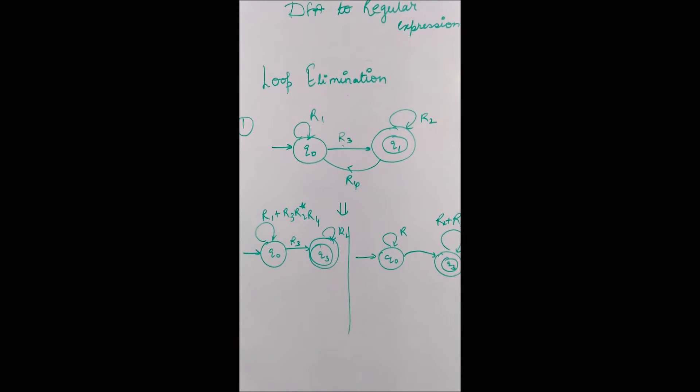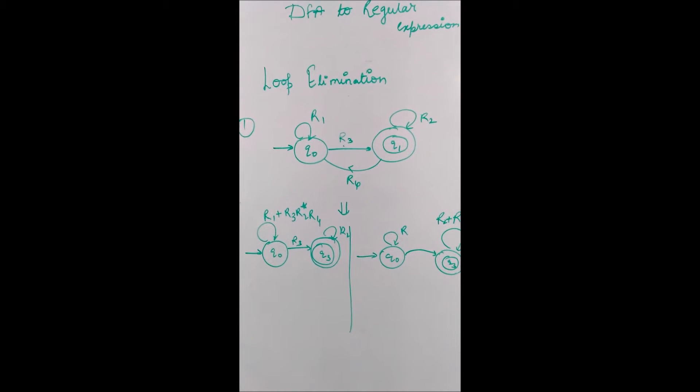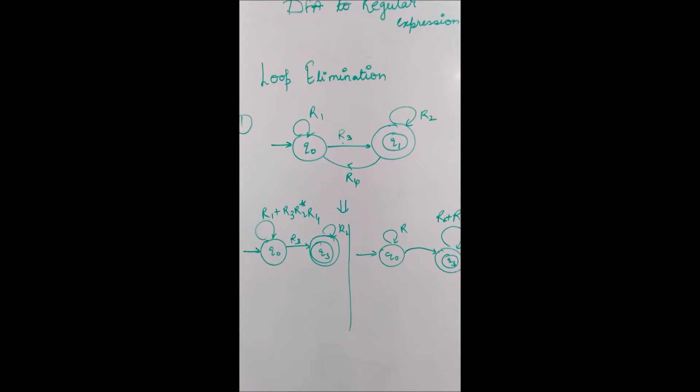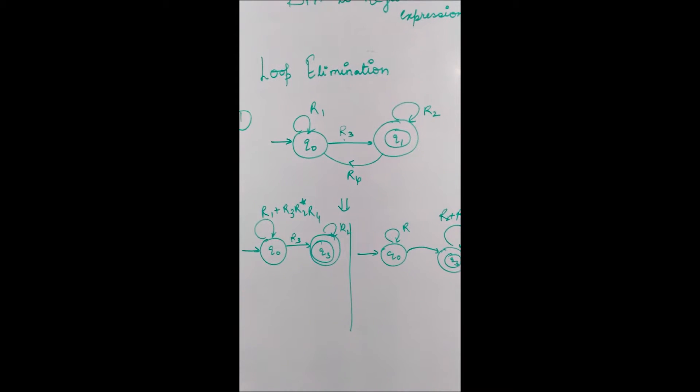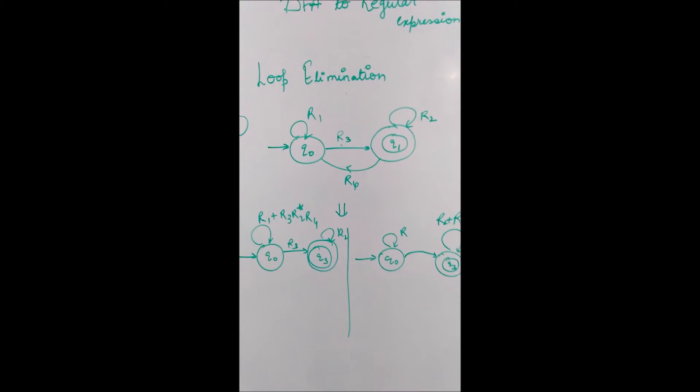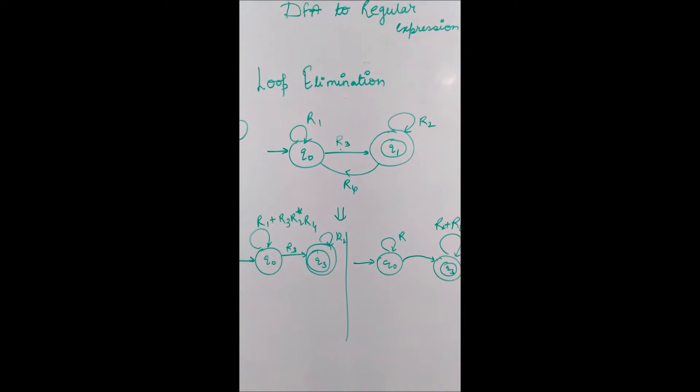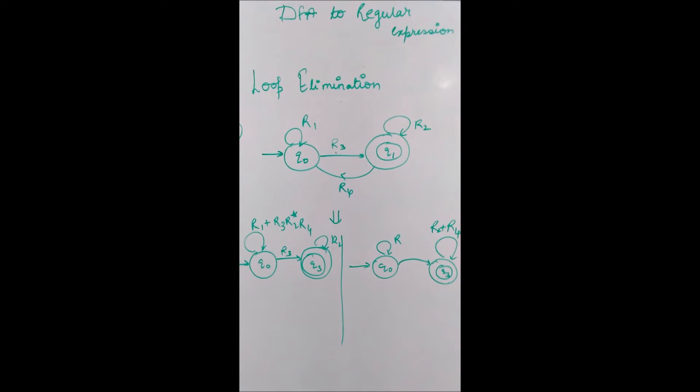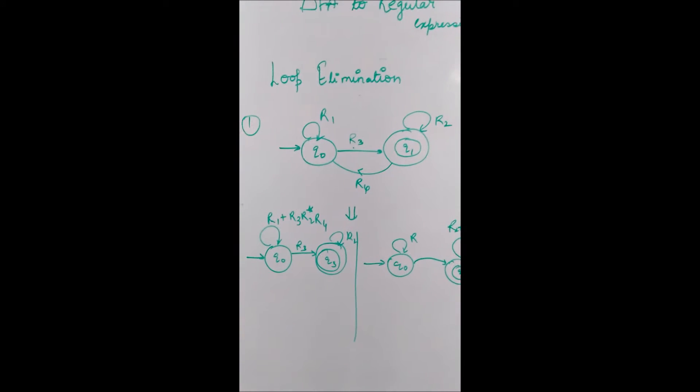Let's take an example. Consider the DFA which is shown in the figure. We have two states q0 and q1 and we have a loop from q0 to q1 and back to q0.